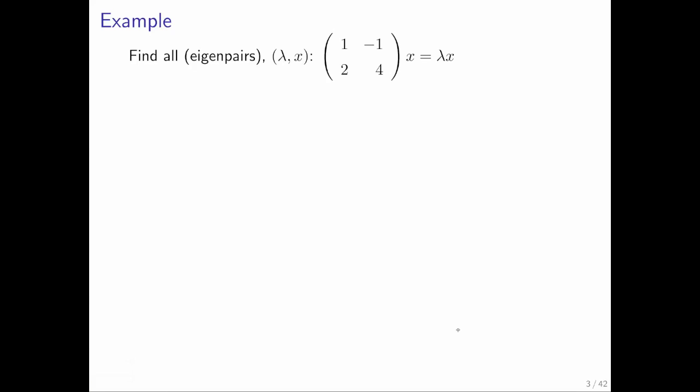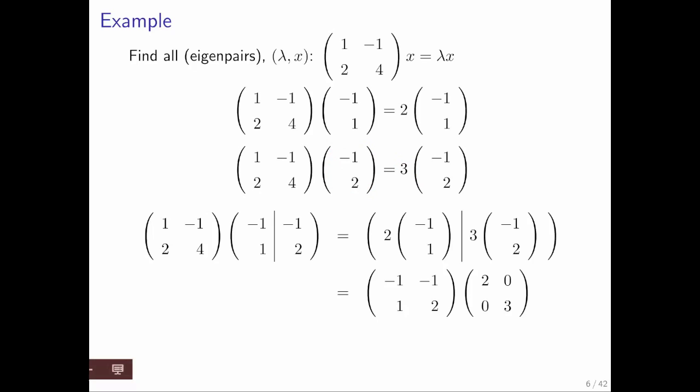For this particular matrix, we found the eigenpair (2, [-1, 1]) and the eigenpair (3, [-1, 2]). So, if you take these eigenvectors, and you make them into the columns of the matrix, which is something that we've done often,